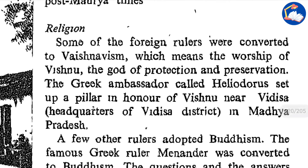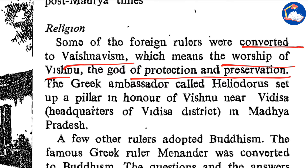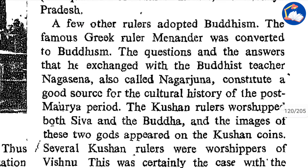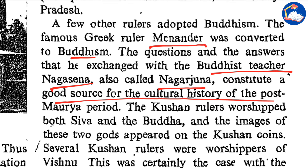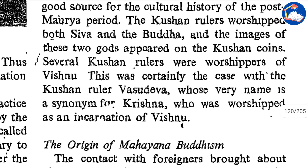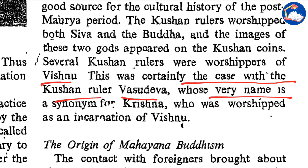In religion, some of the foreign rulers were converted to Vaishnavism — the worship of Vishnu, the god of protection and preservation. The Greek ambassador Heliodorus set up a pillar in honor of Vishnu near Vidisha in Madhya Pradesh. A few other rulers adopted Buddhism — the famous Greek ruler Menander was converted to Buddhism, and the questions and answers exchanged with the Buddhist teacher Nagasena constitute a good source of cultural history of the post-Mauryan period. The Kushan rulers worshipped both Shiva and the Buddha, and images of the two gods appeared on Kushan coins. Several Kushan rulers were worshippers of Vishnu — this was certainly the case with the Kushan ruler Vasudeva, whose very name is synonymous with Krishna, who was worshipped as an incarnation of Vishnu.